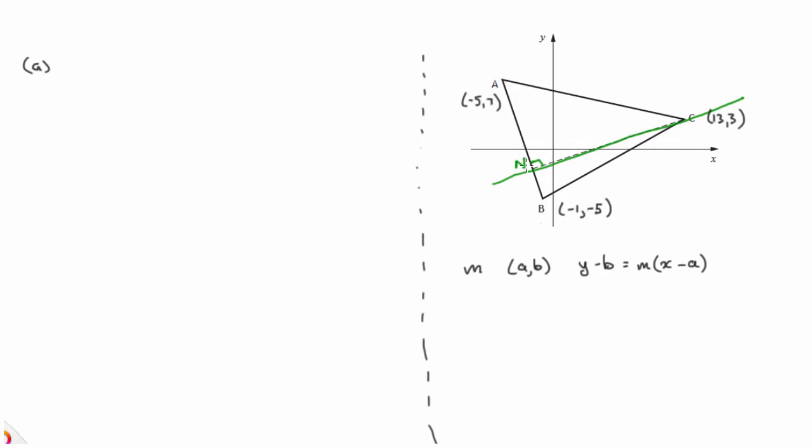We'll also need to know the equation of a line passing through two given points. Suppose it passes through P and Q, (x1, y1) and (x2, y2), then the gradient of the line passing through these two points is given by the y difference, y2 minus y1, over the x difference, x2 minus x1.